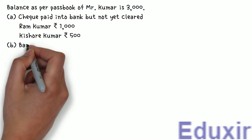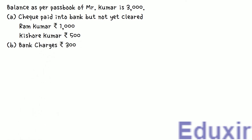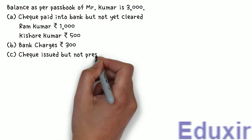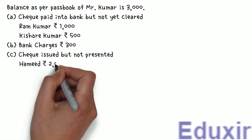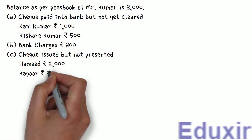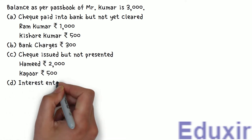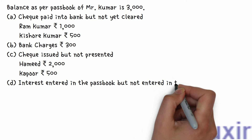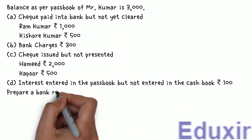B: Bank charges Rs. 300. C: Check issued but not presented. D: Interest entered in the passbook but not entered in the cashbook Rs. 100. Prepare a bank reconciliation statement.